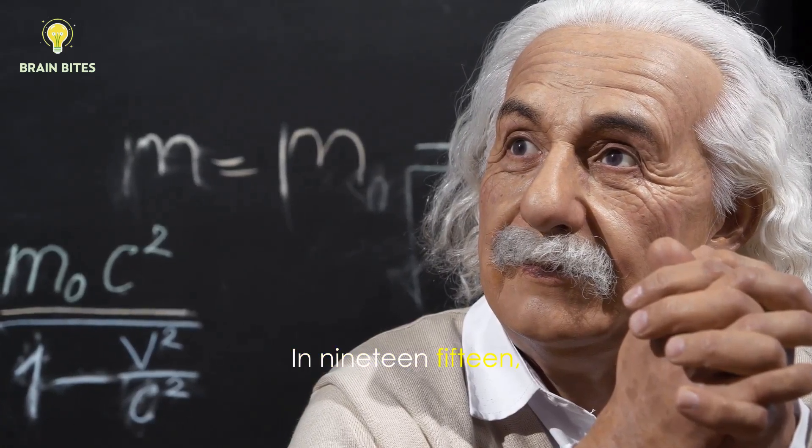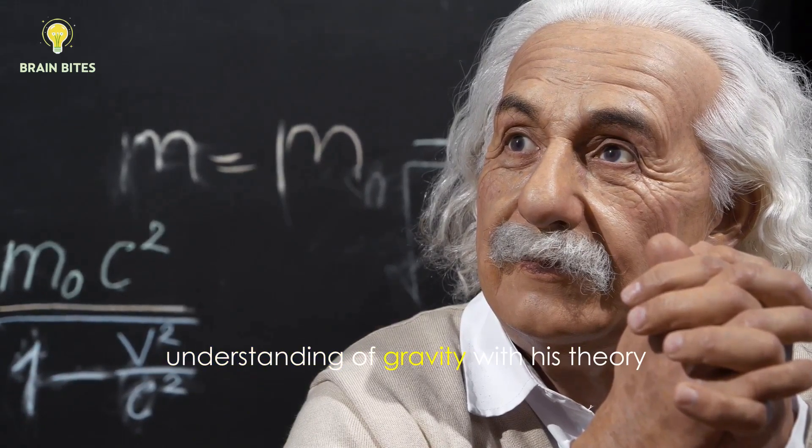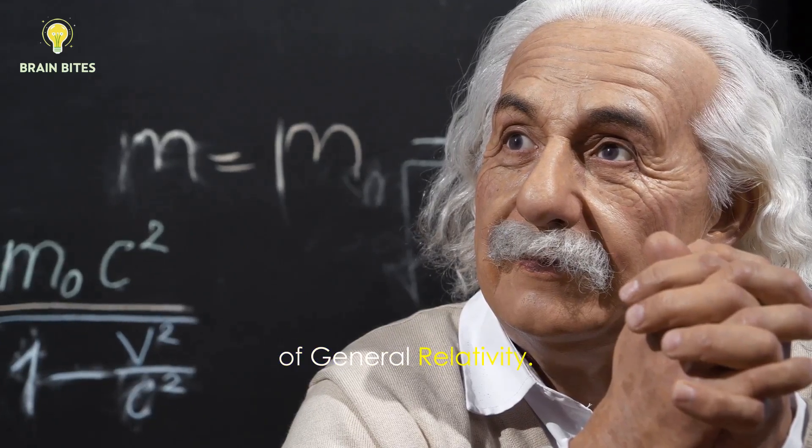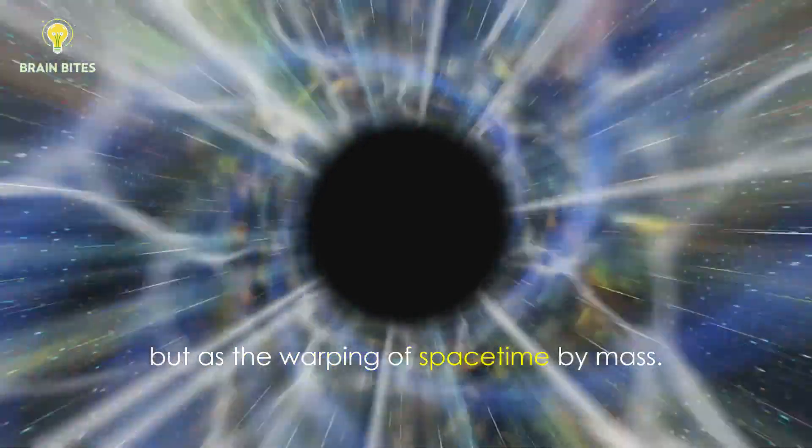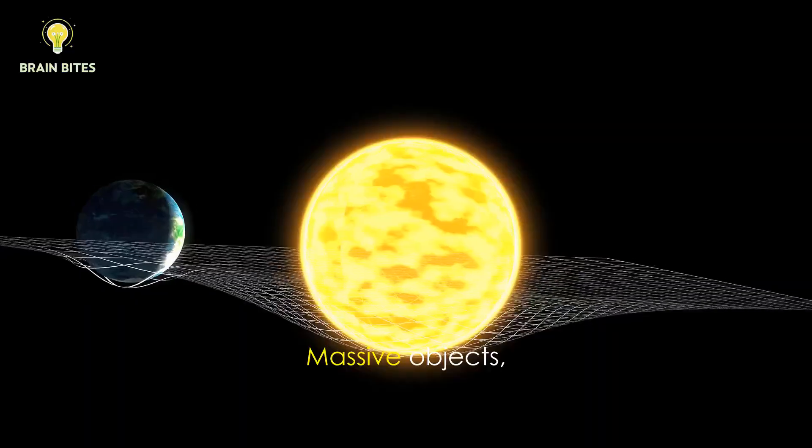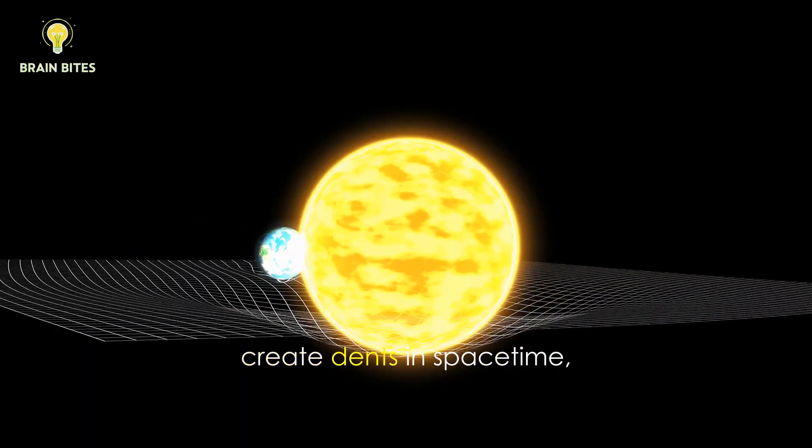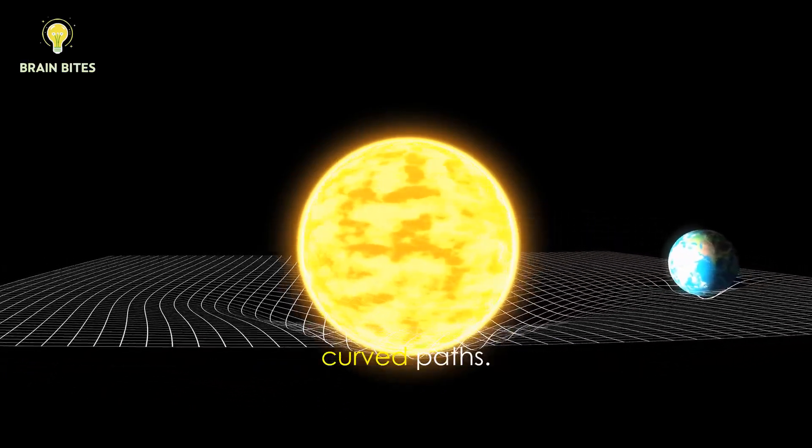In 1915, Albert Einstein transformed our understanding of gravity with his theory of general relativity. He described gravity not as a force, but as the warping of spacetime by mass. Massive objects, like planets and stars, create dents in spacetime, causing other objects to move along curved paths.